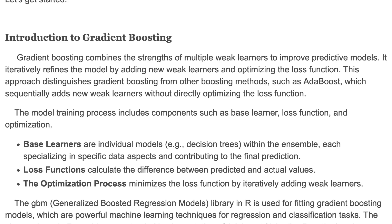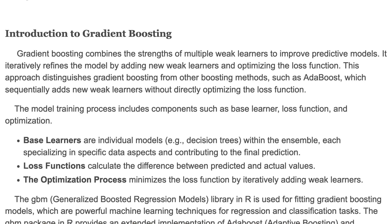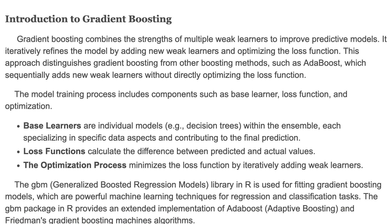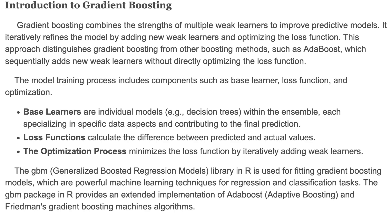Base learners are individual models — here, decision trees — within the ensemble, each specializing in specific data aspects and contributing to the final prediction. Loss functions calculate the difference between predicted and actual values. The optimization process minimizes the loss function by iteratively adding weak learners. The GBM package in R is used for fitting gradient boosting models, which are a powerful machine learning technique for regression and classification tasks.